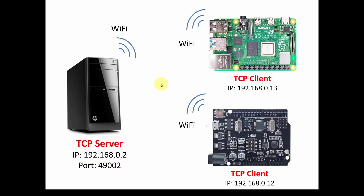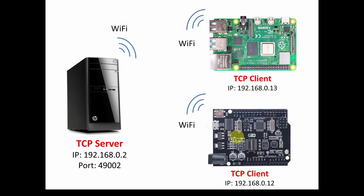Welcome back to part two in our series, where we're going to show you how to configure a system including what we call a server, which is our desktop computer. I've also got an Arduino with built-in Wi-Fi and a Raspberry Pi. We're going to set up a system and write the code for these three devices so that we can communicate via Wi-Fi. I encourage you to look at the previous videos — we did a tutorial on Wi-Fi and how it works, and also a video on this $10 Arduino with a built-in Wi-Fi chip.